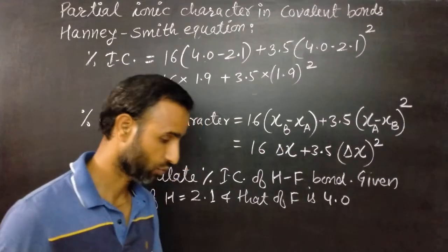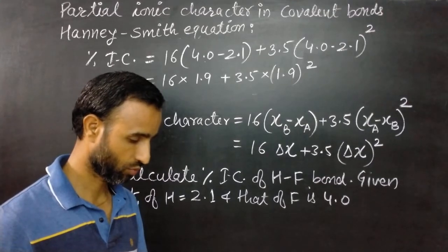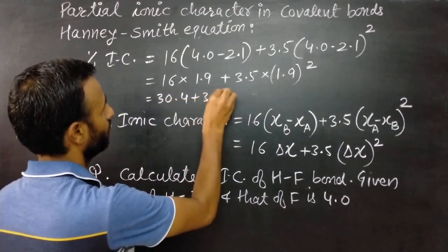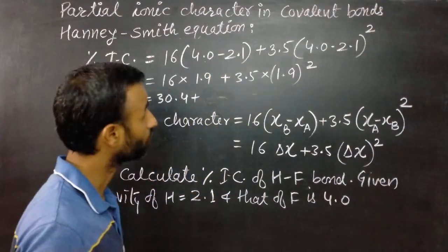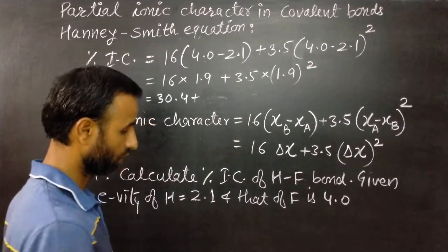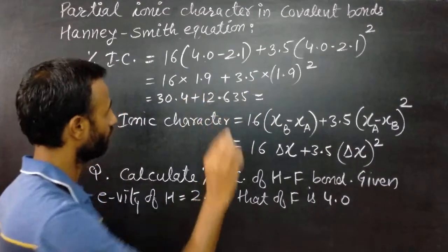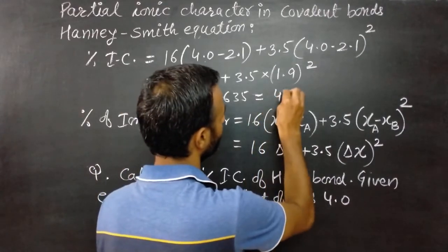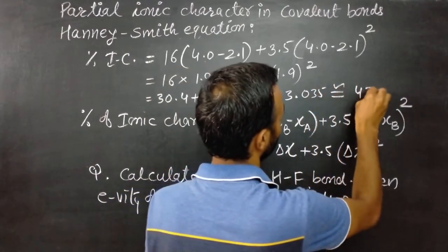16 times 1.9, so it is 30.4 plus 3.5 times 1.9 times 1.9. So it is 12.635. So it comes out to be 43.035, or we can say rounding it is 43 percent.